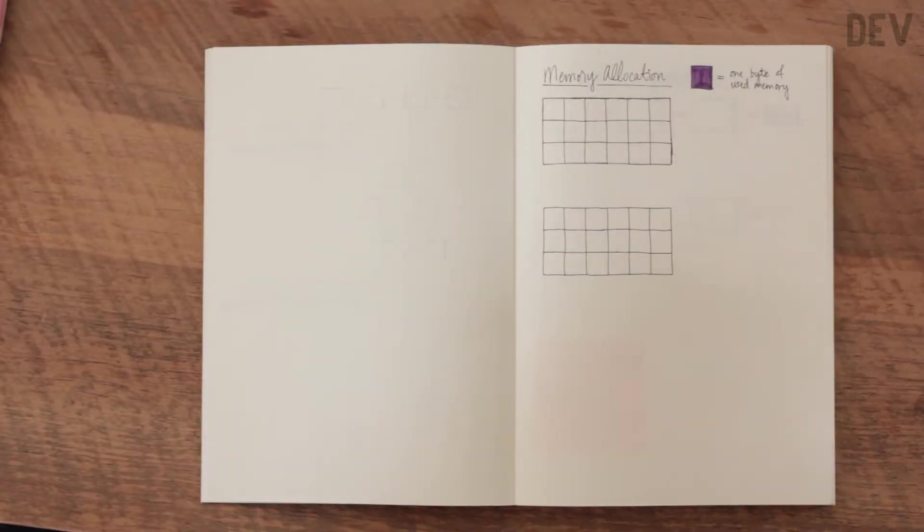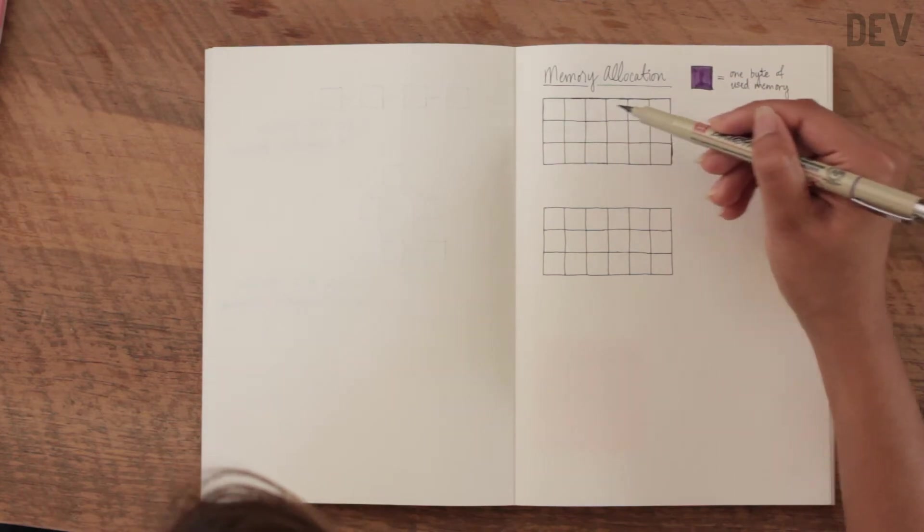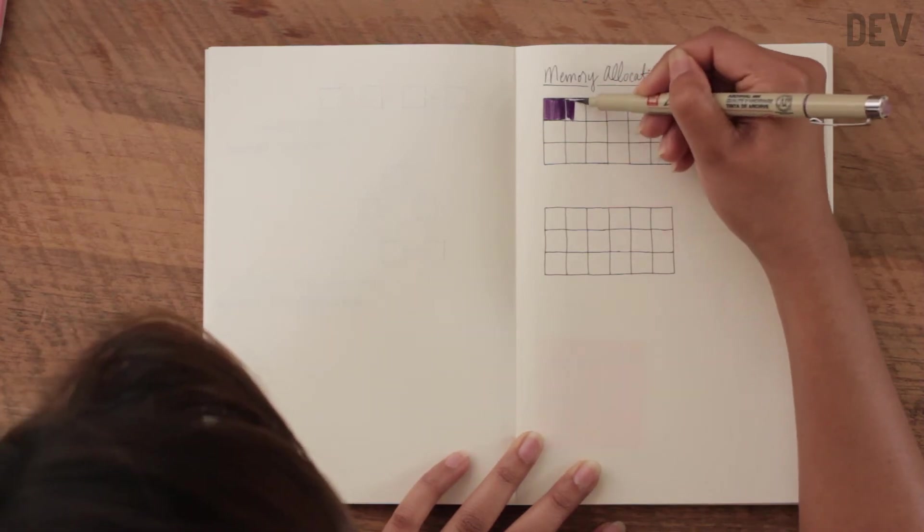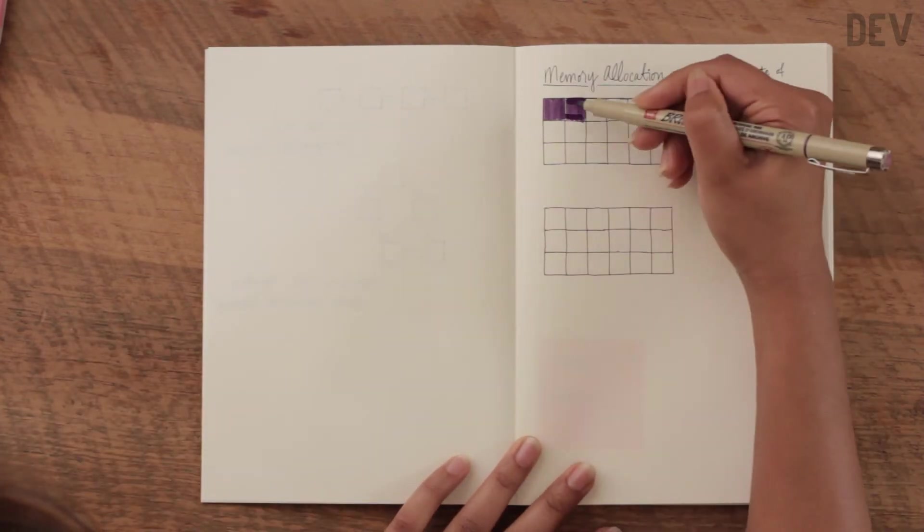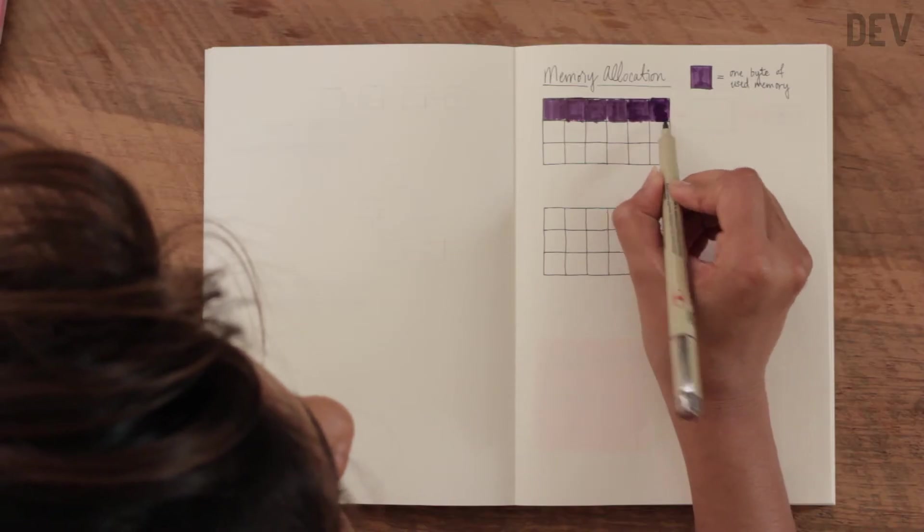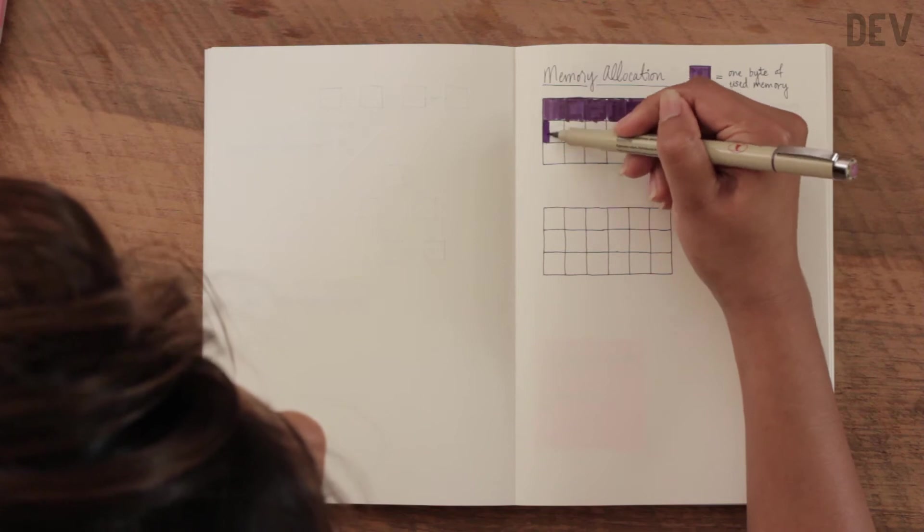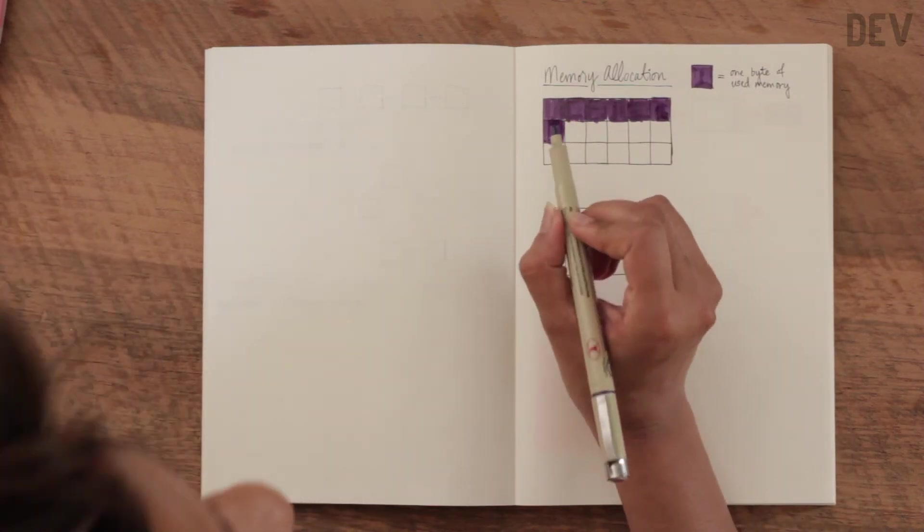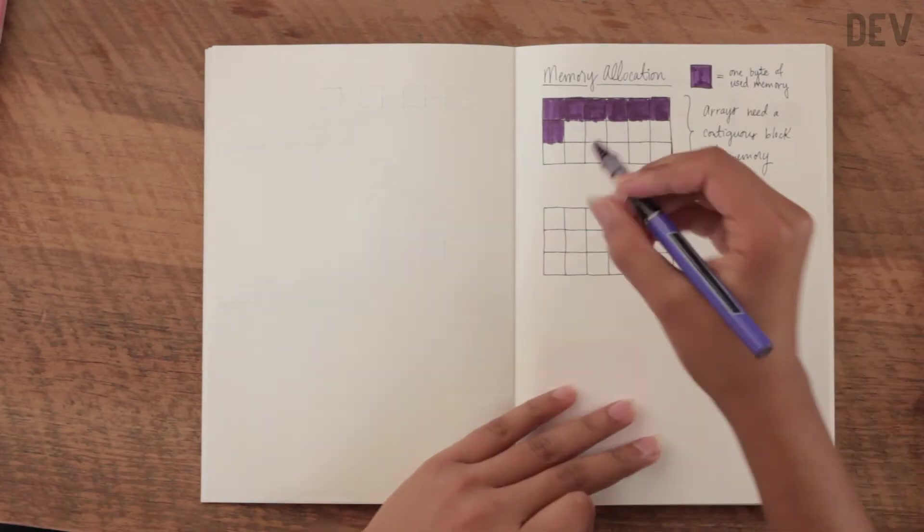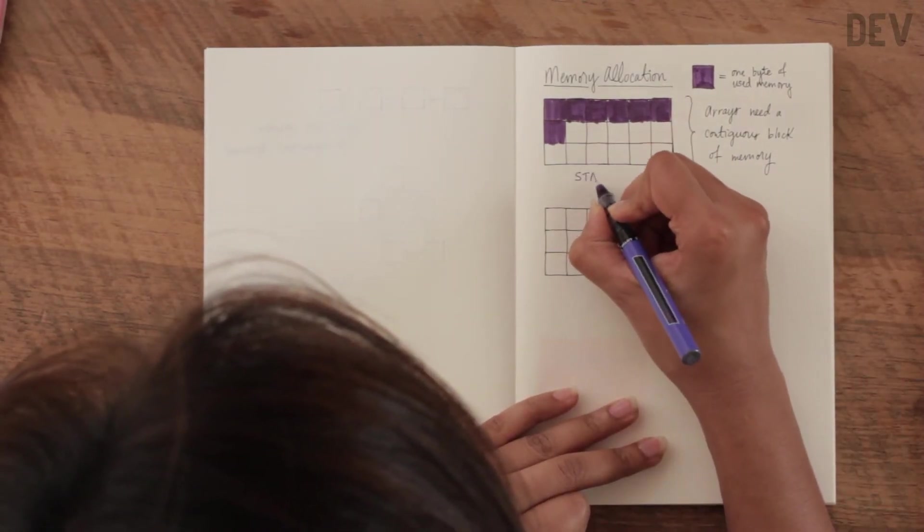Let's say that one byte of used memory is represented by one of these purple squares. Imagine we had seven letters that we needed to store in an array. Maybe we need seven bytes to represent that. An array would need to know how much memory to allocate before we can create it. So if we need seven bytes of memory, we need to allocate seven of these squares. Arrays need a contiguous block of memory in order to allocate space for whatever it is you're trying to represent. This is also referred to as a static data structure.